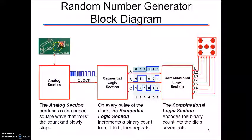You can see we have an image of a push button switch indicating a press to roll. It's then going to feed into the analog section which produces a dampened square wave that rolls the count and slowly stops. So you can see a visual of what they want that clock signal to look like.